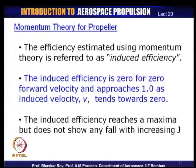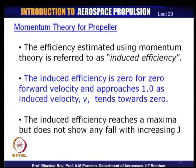The efficiency estimated through the momentum theory is called induced efficiency. This induced efficiency is 0 for zero forward velocity and approaches 1 as the induced velocity v tends to 0. The induced efficiency reaches a maximum but does not show any fall with increasing J — the advance ratio introduced in the last lecture.